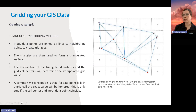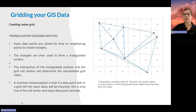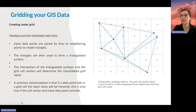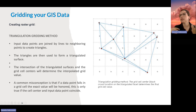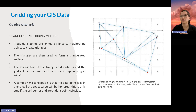We're going to start by speaking about the triangulation gridding method. For triangulation, the input data points are joined by lines to create triangles based on closest distance. These triangles are then used to create a triangulated surface, and the intersection of those triangulated surfaces with the grid cell centers determines the grid value. A common misconception is that if a data point falls in a grid cell then the value will be honored — this is only true if the cell center of the input data coincides.